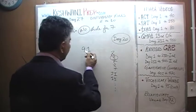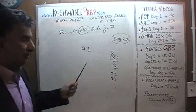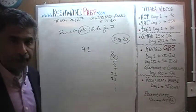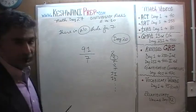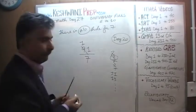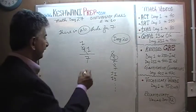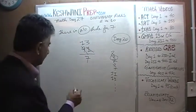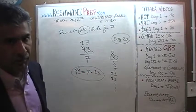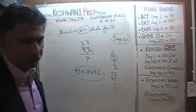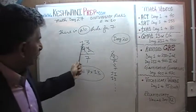Is 91 divisible by 3? No — 9 plus 1 is 10 and 10 is not divisible by 3. It's clearly not divisible by 5 because it doesn't end in a 5 or 0. Is it divisible by 7? That's what we have to figure out — there is no rule, we simply have to do it out. How many 7s in 9? 9 has one 7. The remaining 2 joins the 1 to become 21, and 21 has exactly three 7s. So 91 divided by 7 equals 13 — 91 is not a prime number; it is a composite number, the product of two prime numbers. The only way to know was to actually do it out.